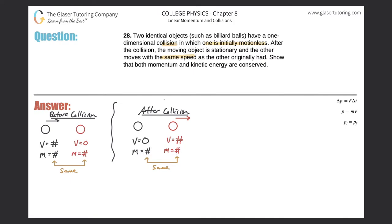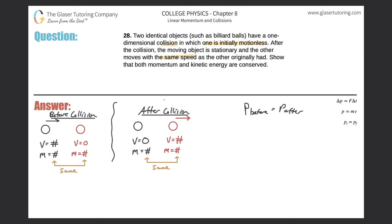We have to show that momentum is conserved. We start with the formula that momentum before the collision equals momentum after. To expand this formula, we need to know whether it's an inelastic or elastic collision. Inelastic means the objects stick together; elastic means they separate after the collision. Since the two balls are separated — one not moving and the other moving — we know it's elastic.